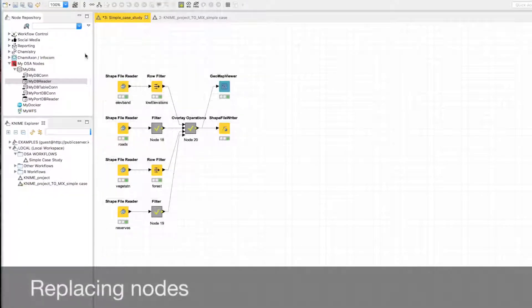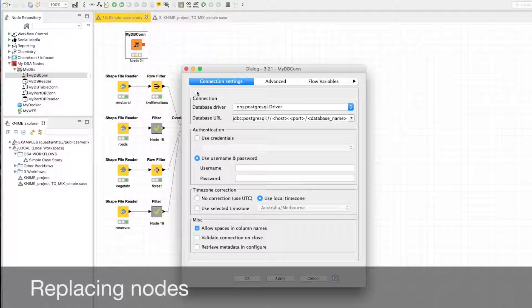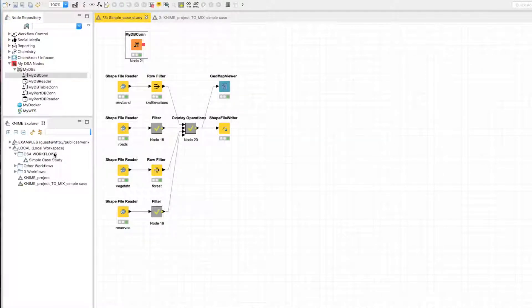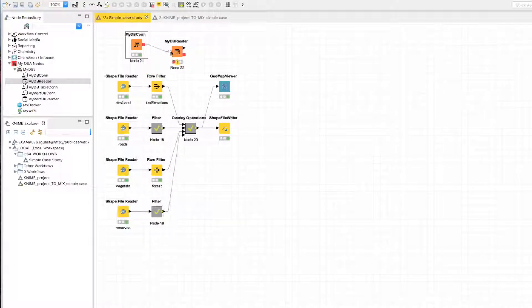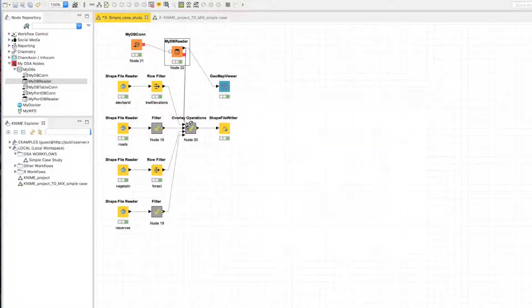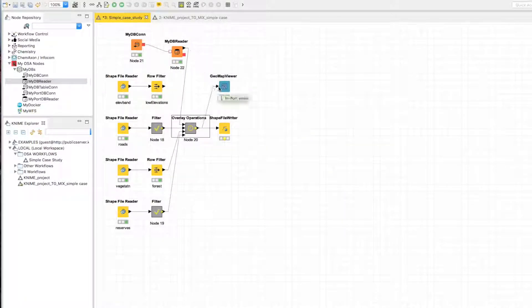Our workflow platform can combine spatial data and operations from many different sources. Here we can see the user replacing a local data source with a remote post-GIS database, using only drag-and-drop actions. The user can again simply rerun the analytics process with the new data source.